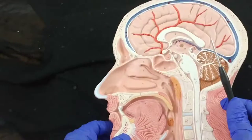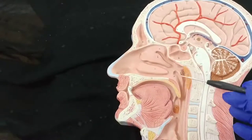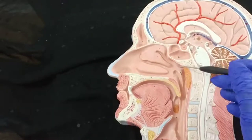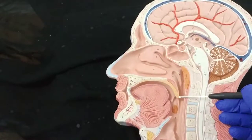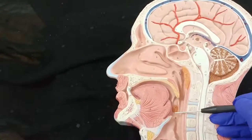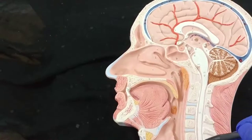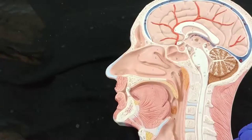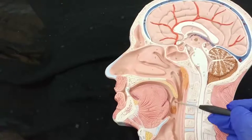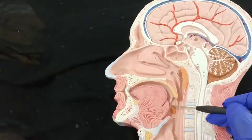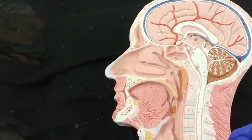Going to the pharynx, we have the nasopharynx — from the base of the skull below the sphenoid bone down to the uvula. From the uvula to the tip of the epiglottis, we have the oropharynx. From the tip of the epiglottis to the beginning of the trachea is the laryngopharynx. Nerve supply: the nasopharynx from the maxillary nerve, the oropharynx sensory innervation from the glossopharyngeal nerve, and the laryngopharynx by the vagus nerve.